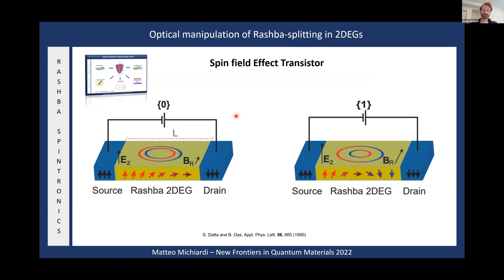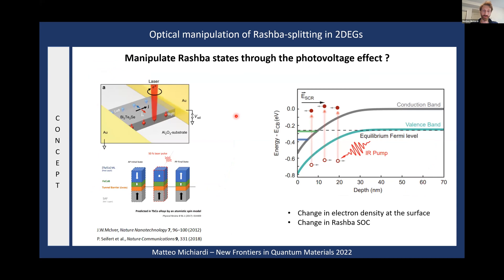What we are curious about is whether we can manipulate the Rashba effect not with static gates but using optical excitations. This bridges the field of optics — which brings good energy efficiency and very fast dynamics — into the field of spin-dependent phenomena: spintronics.